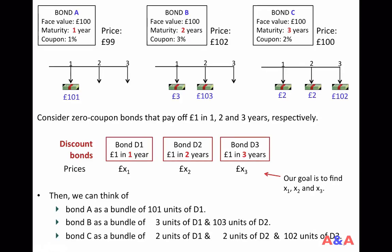Suppose there are three different coupon bonds currently available in the market. All of them have the same face value of 100 pence, but different time to maturity and coupon rates. Bond A has time to maturity 1 year, coupon rate 1%, and current price 99 pounds. Bond B has time to maturity 2 years, coupon rate 3%, and current price 102 pounds. Bond C has time to maturity 3 years, coupon rate 2%, and current price 100 pounds.